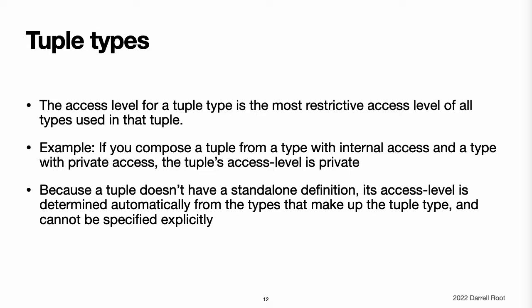Tuple types. The access level for a tuple type is the most restrictive access level of all the types used in that tuple. For example, if you compose a tuple from two different types, one with internal access and one with private access, the access level for that compound tuple type will be private. Tuple types do not have a standalone definition in the way that classes, structures, enumerations, and functions do. A tuple type's access level is determined automatically from the types that make up the tuple type and cannot be specified explicitly.